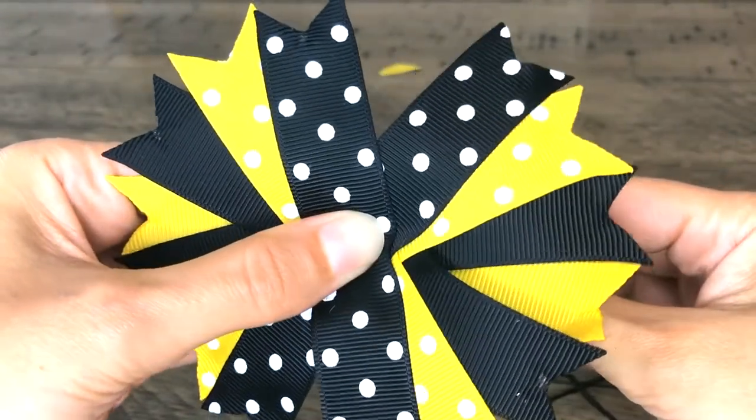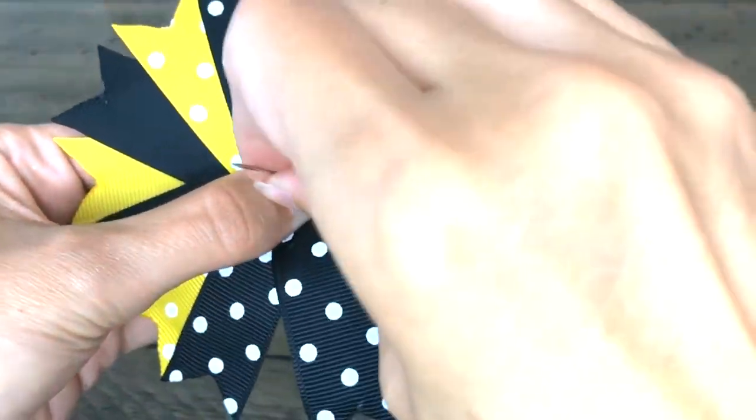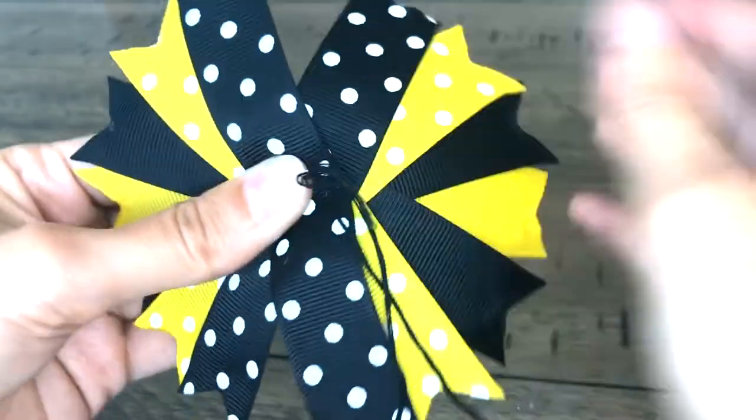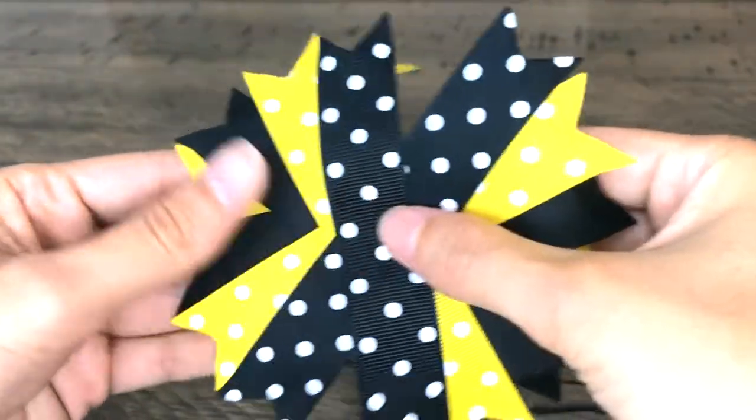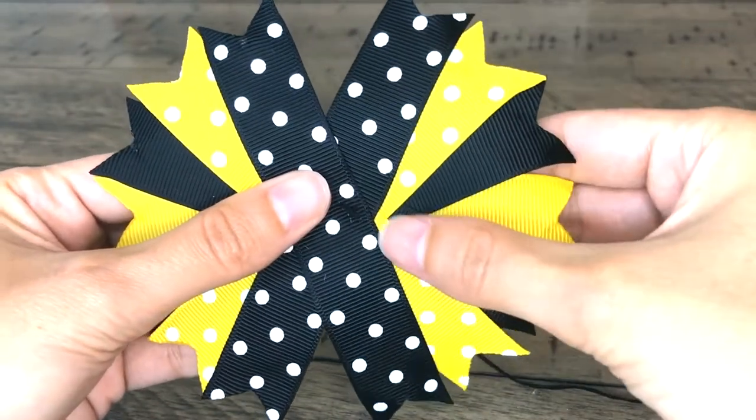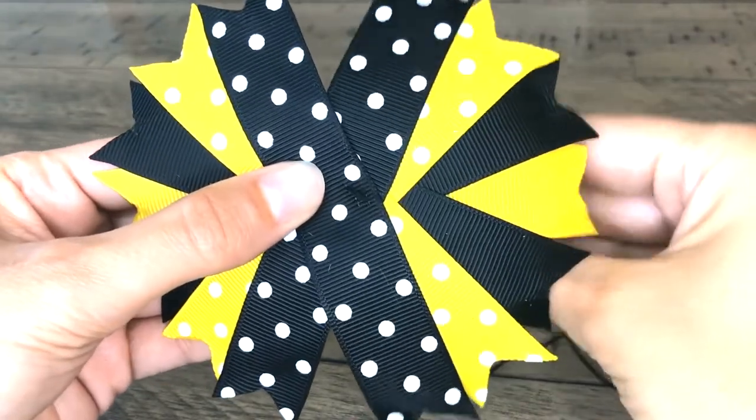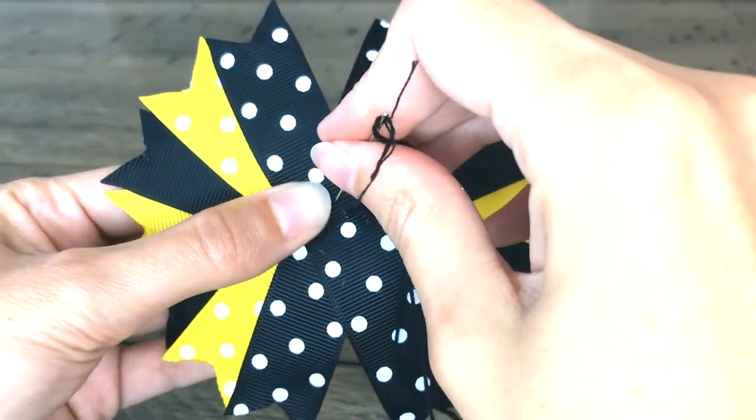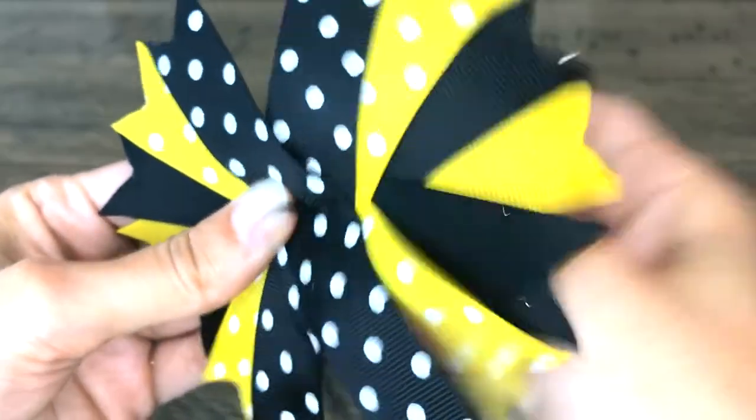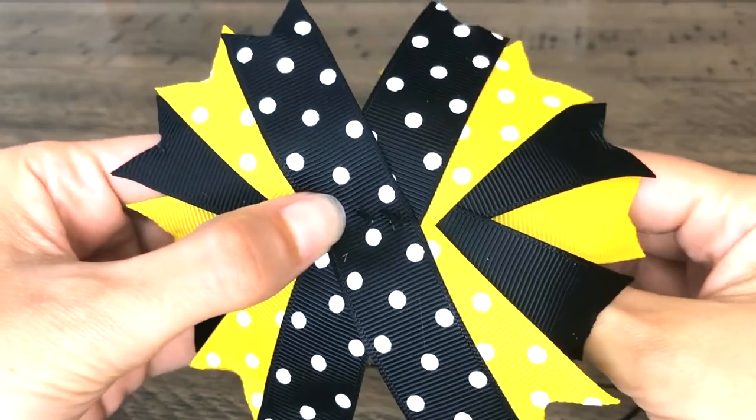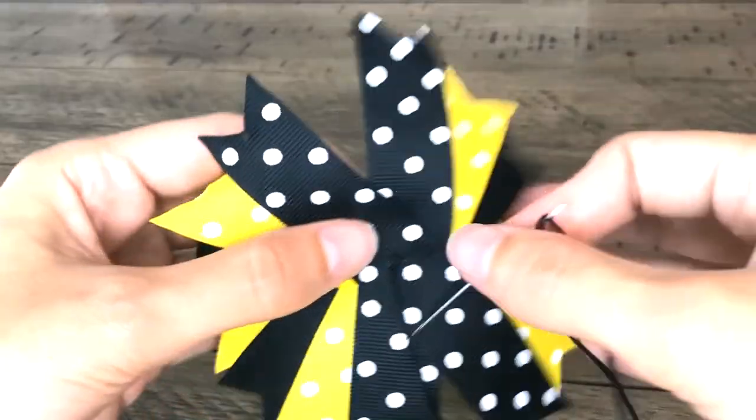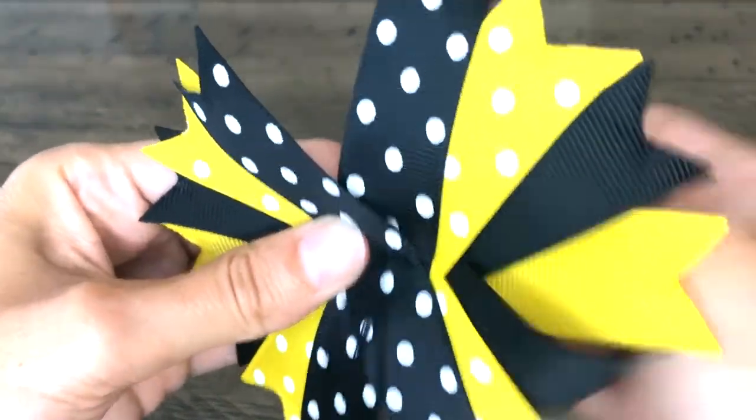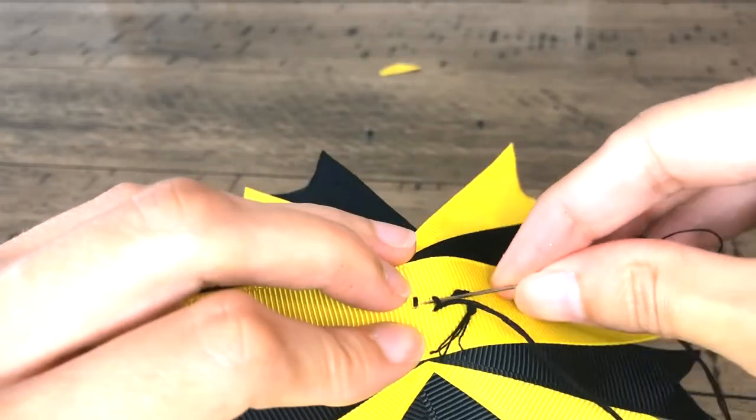So that looks pretty good. So I'm just going to just do a few stitches on it. This all gets covered up. So if you're not the neatest hand sewer, it really doesn't matter. And I'm just going to make sure my pieces are kind of where I want them. And then I'll do one more X here. And I'll just cut this off.